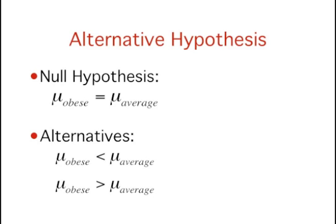If the sample mean for the obese patients is lower than the sample mean for the average weight patients, then you should conclude that the population mean for the obese patients is lower than the population mean for the average weight patients.